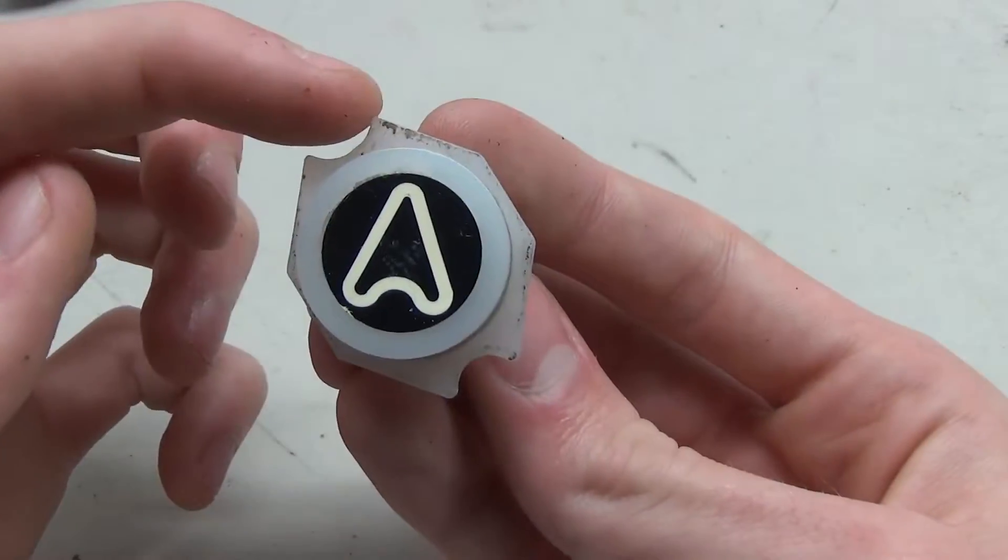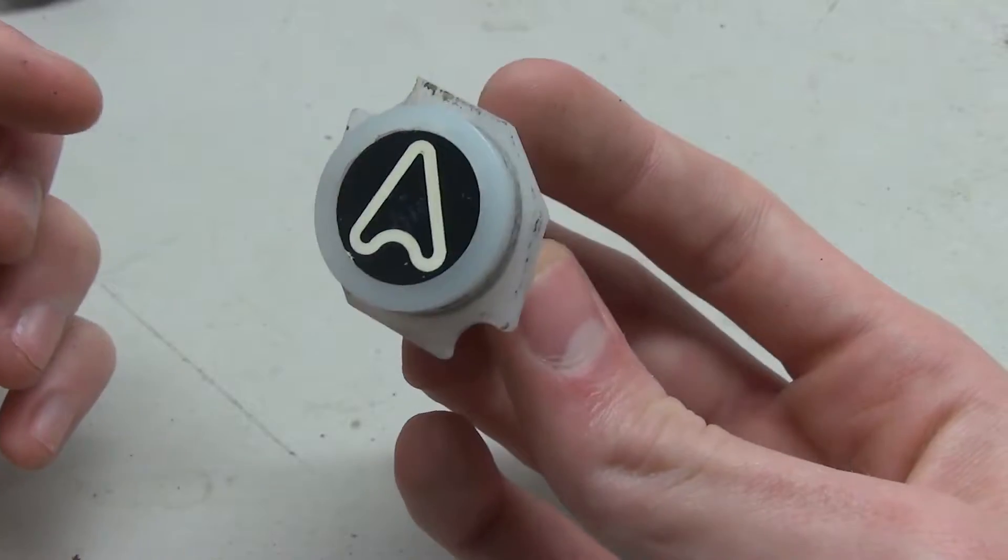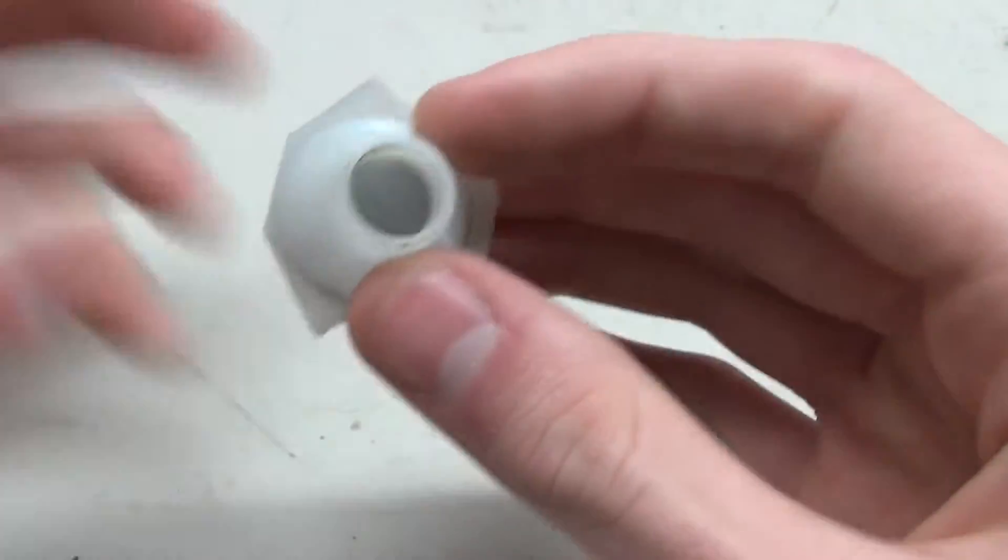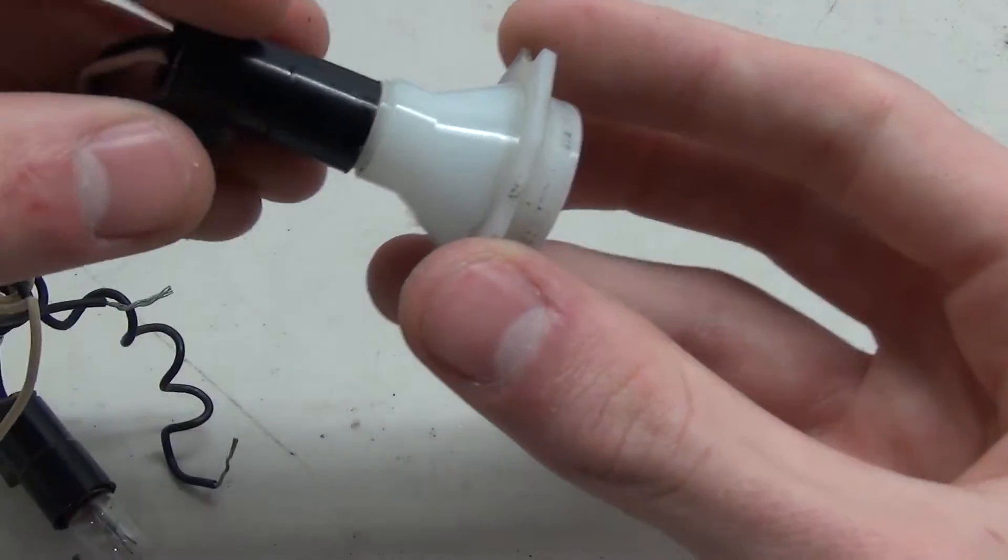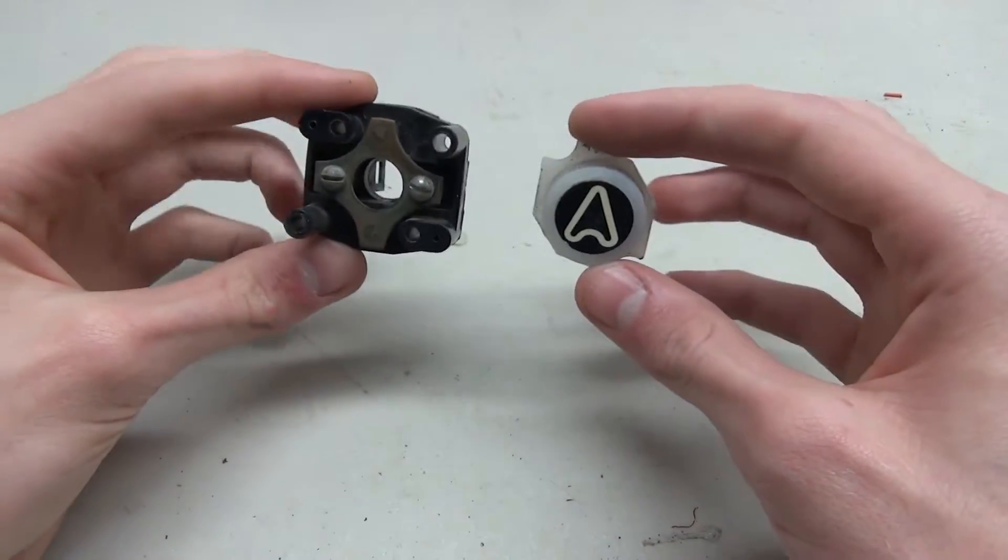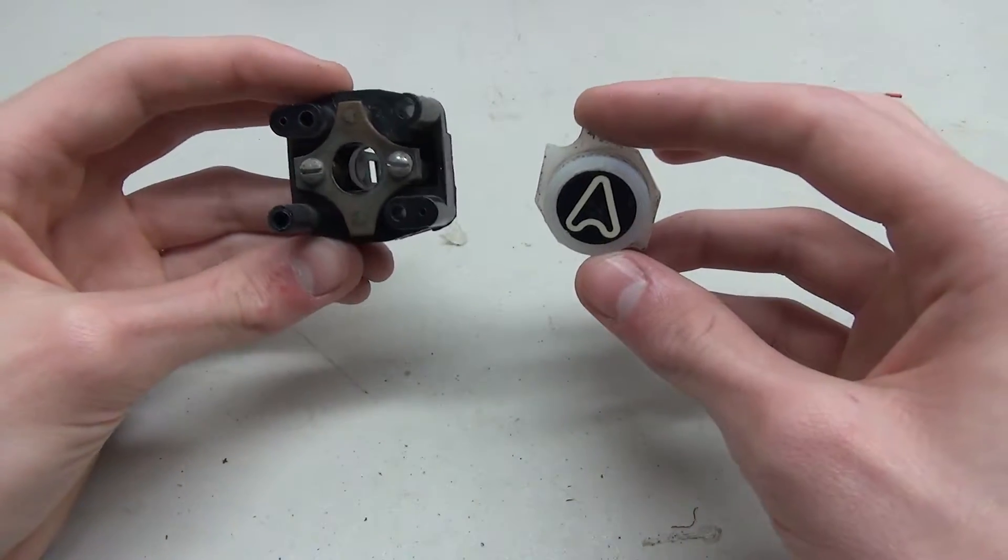Let's take a look at the arrow piece. These little curves here keep it from turning, and on the back you can see that's where the bulb would go in to light up the button. I'm also going to take off the other button and then we're going to do a little bit of restoration on the plates.